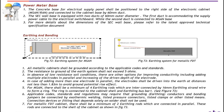Earthing and bonding — there are two different methods of earthing system: one for MSAN and one for metallic FDT. All metallic cabinets shall be grounded according to the applicable codes and standards. Resistance to the ground of the earth system shall not exceed 5 ohms. In case of low resistance soil condition, there are other options for improving conductivity, including adding multiple electrodes in parallel and increasing the driven depth of the electrodes.